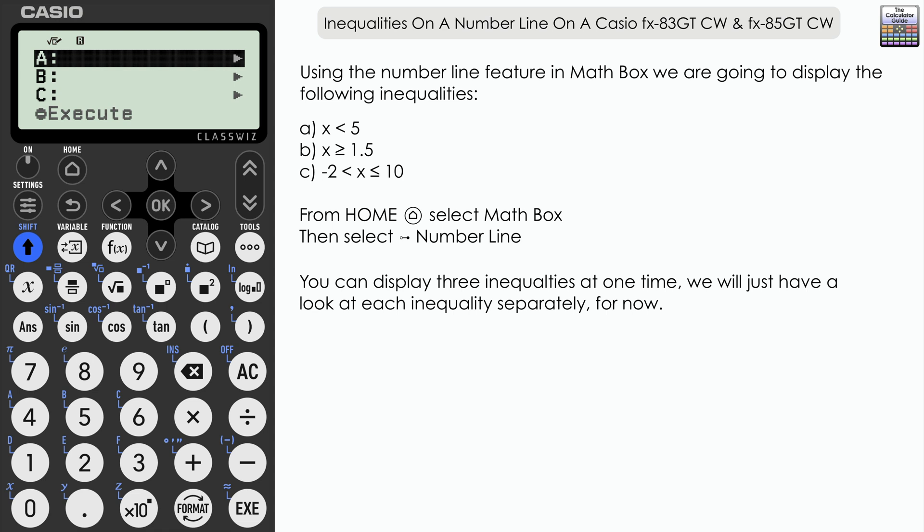X is less than 5. We're going to input that. We're just going to use the A entry on this one, so press execute and we're just looking for the correct model that we want to use on our number line. Well it just so happens it's the first option that we have here: X is less than A, where A is some value we're going to input.